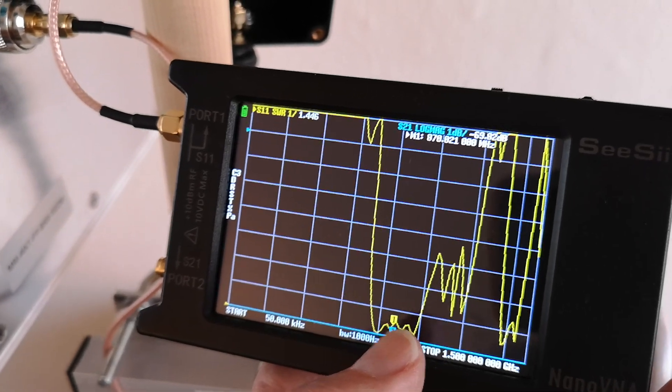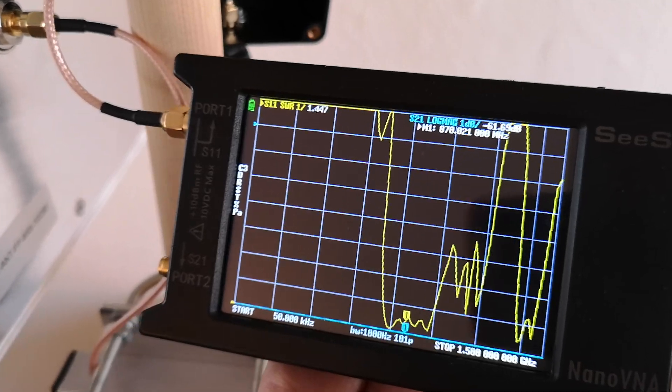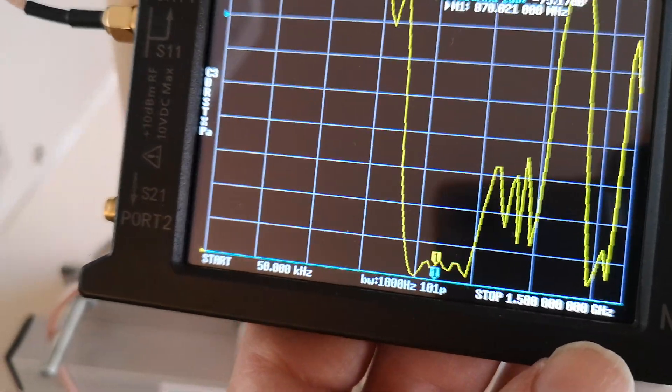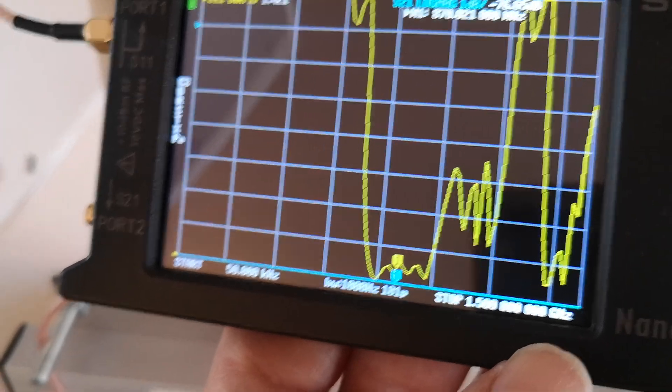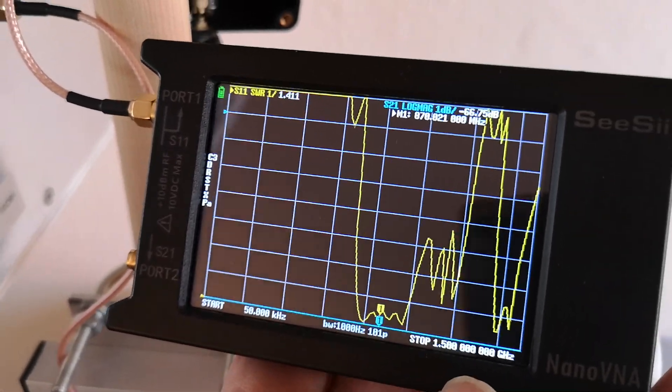The first line up is 2 to 1 SWR, that's 1 to 1, so it's always less than 1.5 to 1. And the center frequency, yeah, perhaps I'm not going to worry about that. Anyway, it's around 868 and that's where it's working.